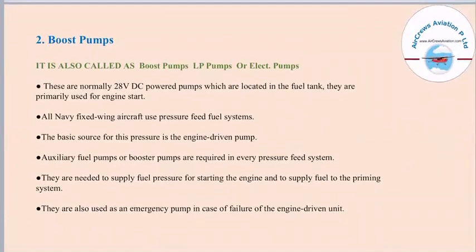The boost pump is also called the LP pump or electric pump. These are normally 28-volt DC powered pumps located in the fuel tank, primarily used for engine start. All Navy fixed-wing aircraft use pressure feed fuel systems; the basic source for this pressure is the engine-driven pump. Auxiliary fuel pumps or booster pumps are required in every pressure feed system to supply fuel pressure for starting the engine, to supply fuel to the priming system, and to serve as an emergency pump in case of failure of the engine-driven unit.